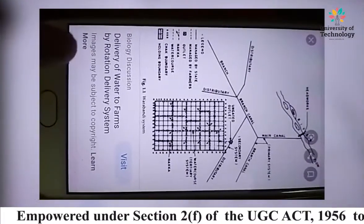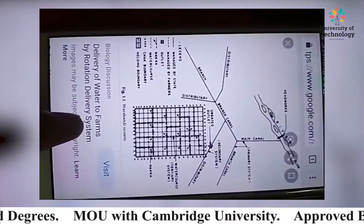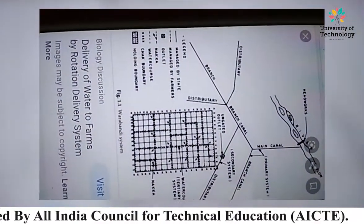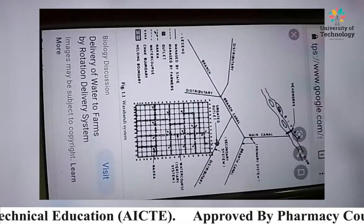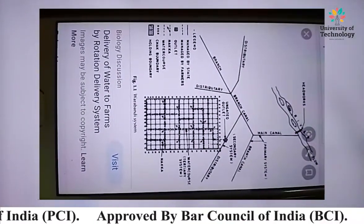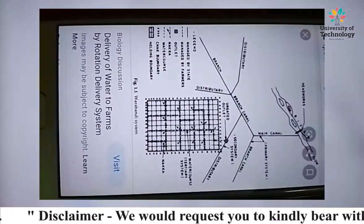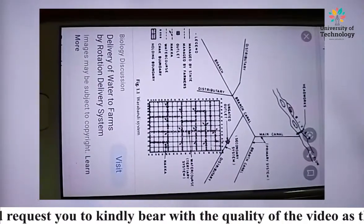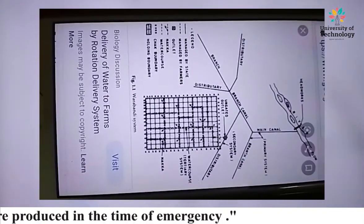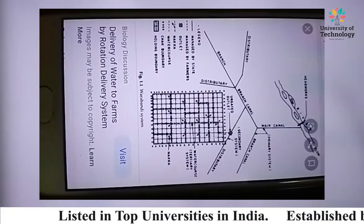In this picture you can see the delivery of water to farms by a rotation delivery system. Each activity in the system is shown by different types of lines, managed by states, managed by farmers, outlets, water course check boundaries, and field boundaries. This represents a proper system of roster rotation of delivery through outlets.